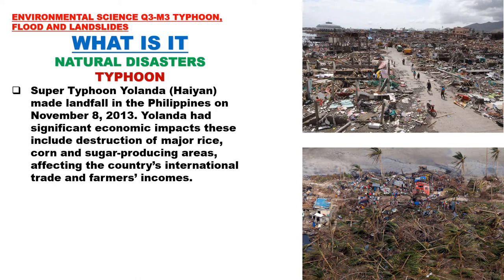Super Typhoon Yolanda, or Haiyan, made landfall in the Philippines on November 8, 2013. Yolanda had significant economic impacts, including destruction of major rice, corn, and sugar-producing areas, affecting the country's international trade and farmers' income. The picture here shows the devastation in Tacloban — a total wipeout, with almost no structures left standing and coconut trees knocked down completely.